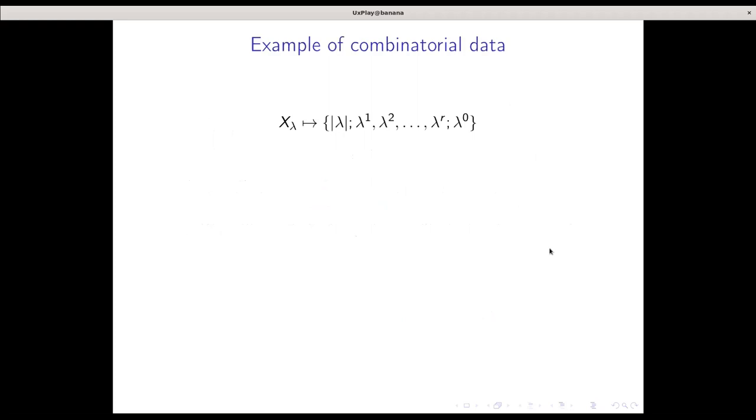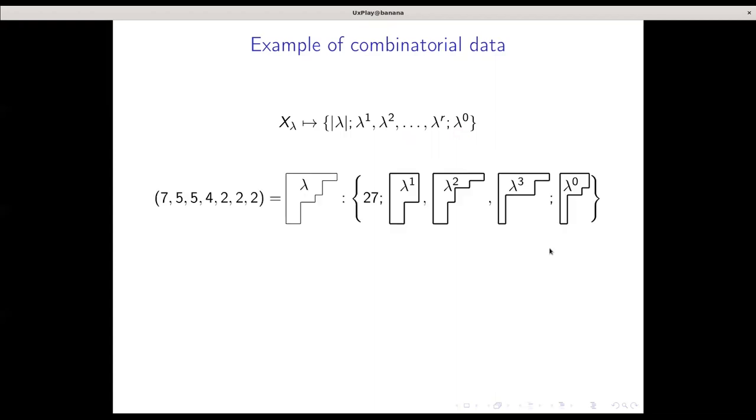To summarize my combinatorial data, given a Schubert variety X_lambda, I look at its dimension, their diagrams coming from its singular locus, and the special diagram lambda_0. As an example, if I were to look at this particular Young diagram, I would get 27, these diagrams, and lambda_0.